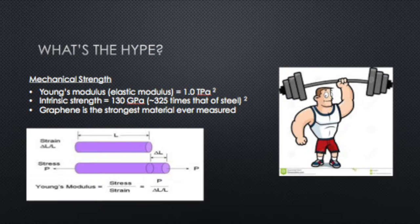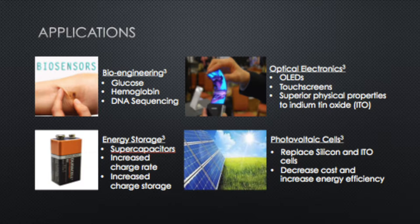So how can we make use of graphene's electronic and mechanical properties? Graphene has a wide variety of real-world applications. Its electronic properties make it a great biosensor — sensors that incorporate graphene can use that high carrier mobility to more accurately and quickly sense glucose levels, hemoglobin levels, and other substances produced by the body.